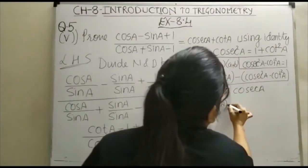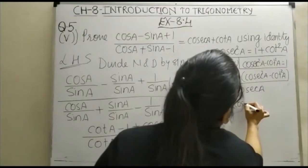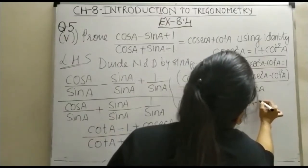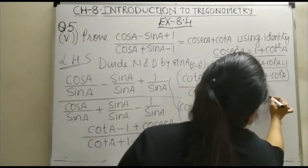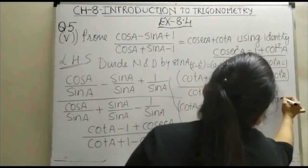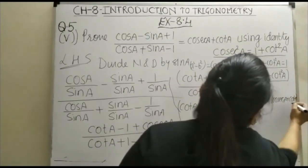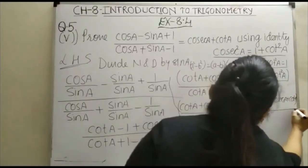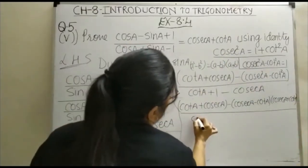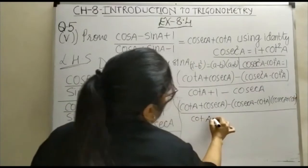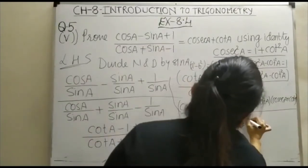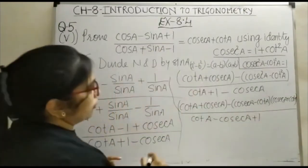So, this will be minus cosecA minus cotA and here it is cosecA plus cotA plus cotA. Upon your denominator, the denominator will be as it is. That is cotA minus cosec square A plus 1.